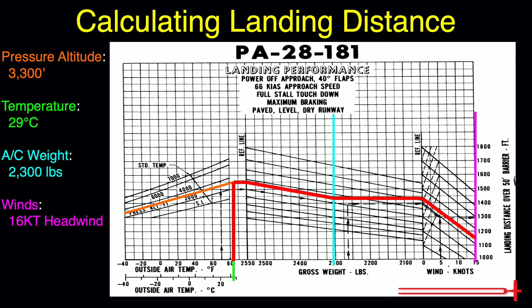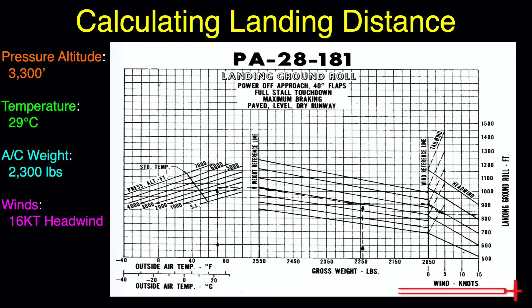After this, we would also want to find our ground roll distance. To do so, we perform the exact same set of steps with the landing ground roll distance chart. First, we plot our data. Then, just like earlier, we go up from our temperature of 29 to our pressure altitude of 3,300, over to the reference line and down to our aircraft weight of 2,300, over to the reference line again and down to our headwind of 15, leaving us with our expected ground roll of about 750 feet.